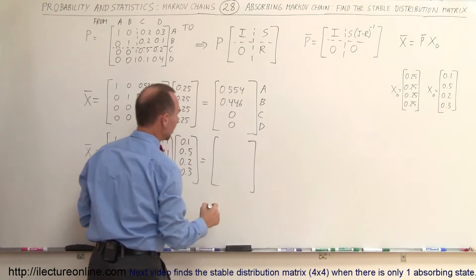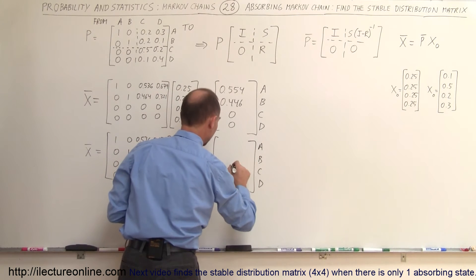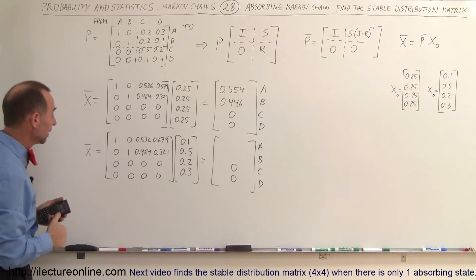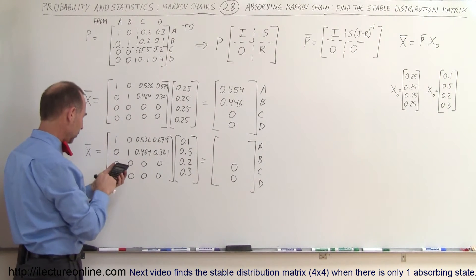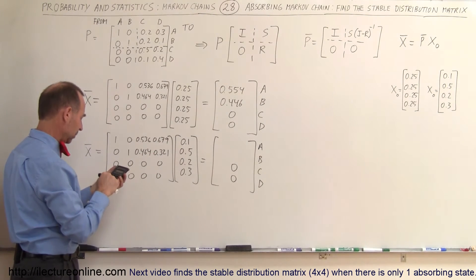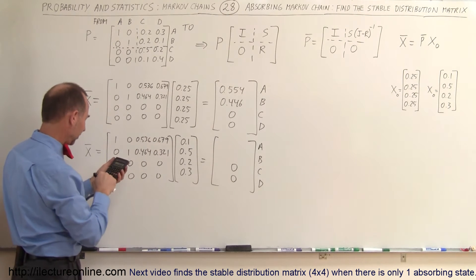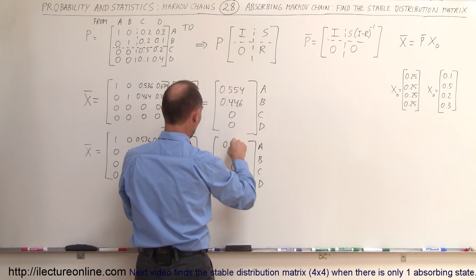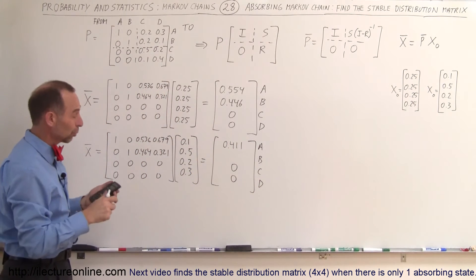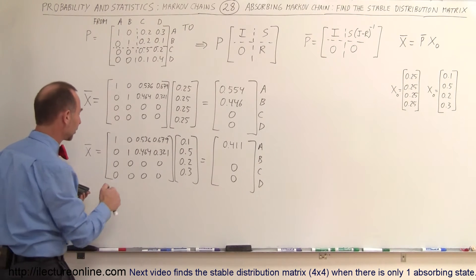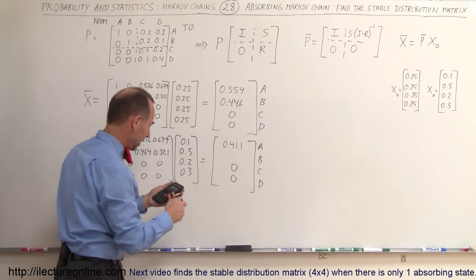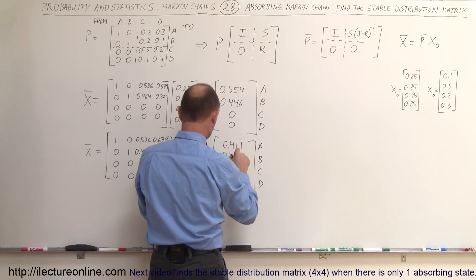What will the final distribution be for states A, B, C, and D? States C and D will still be 0. For state A: 0.1 plus 0.536 times 0.2 plus 0.679 times 0.3 equals 0.411, so A gets 41.1%. For state B: 0.5 plus 0.464 times 0.2 plus 0.321 times 0.3 equals 0.689.